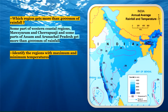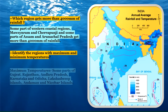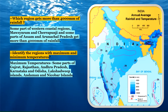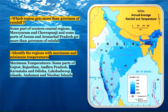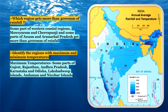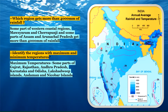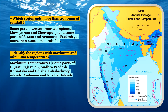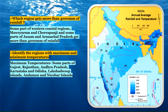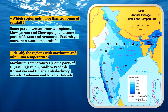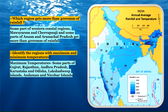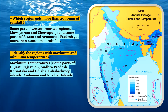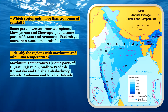The next question: identify the regions with maximum and minimum temperatures. We'll go to the index, where temperatures are shown with the help of lines called isotherms. The maximum temperature shown is 29 degrees. Where do we find 29 degrees? Some parts of Kutch and Rajasthan, some parts of Andhra Pradesh and Karnataka, some parts of Odisha, and the Lakshadweep Islands and Andaman and Nicobar Islands — these are the regions which have a maximum temperature of 29 degrees centigrade.